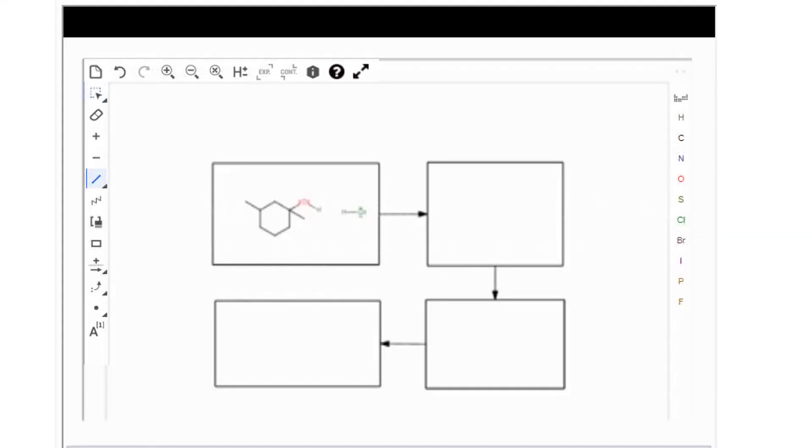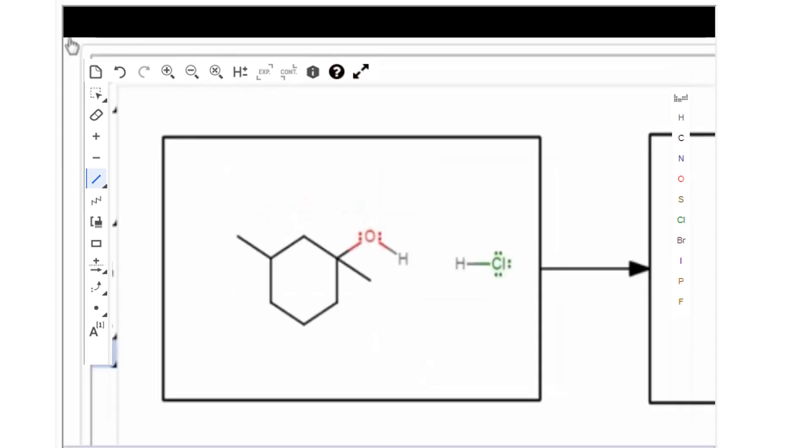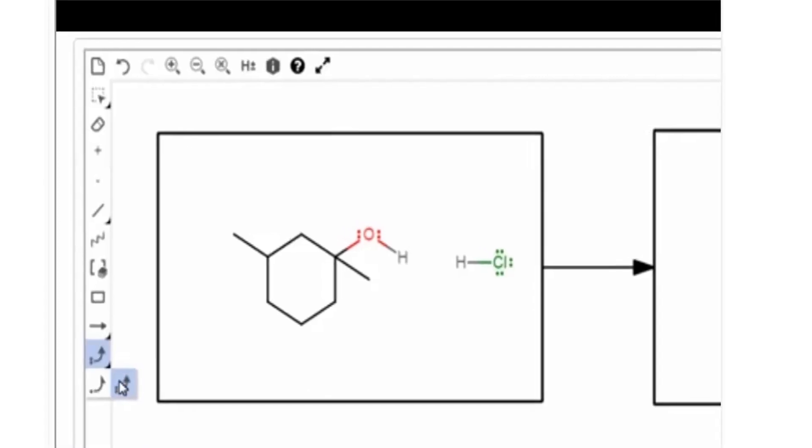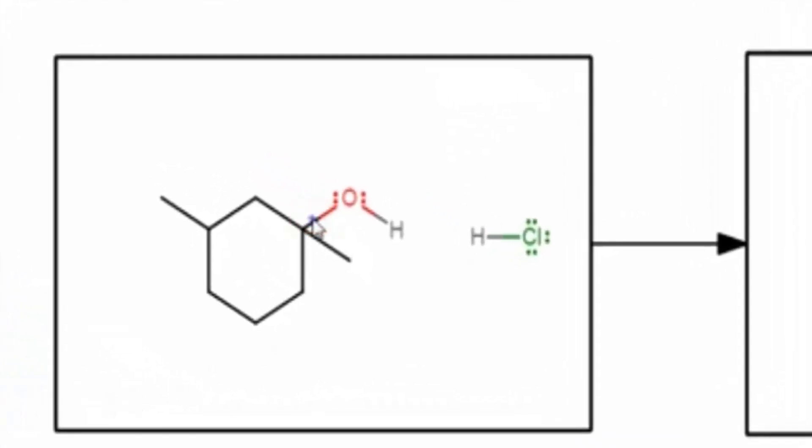To add a curved arrow showing the movement of two electrons, navigate to the Electron Flow menu and select Electron Flow. Click the bond to start electron flow. Drag to the adjacent oxygen atom accepting the electrons. Release the mouse.